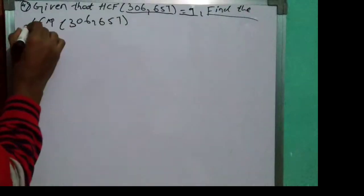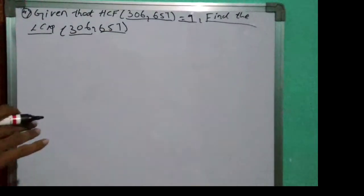Here from the next question, question number 4 from exercise 1.2 real numbers, which is given that HCF of 306 and 657 is 9, and we have to find the LCM of 306 and 657.